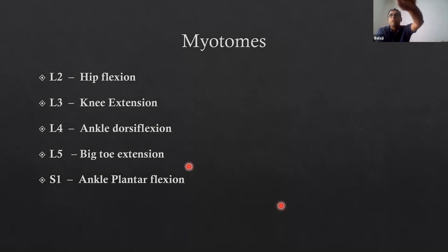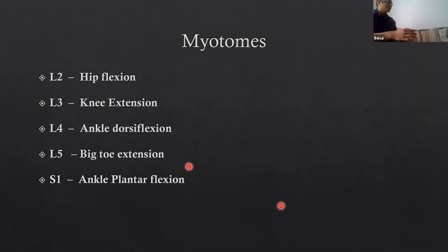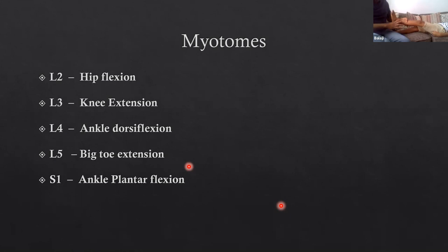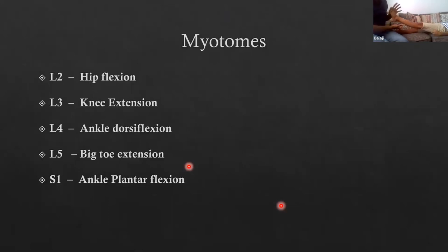To demonstrate the lower limb myotomes with a patient lying down: ask them to lift their leg with the knee straight and resist — that's hip flexion, L2. Knee extension is L3. Ankle dorsiflexion — pulling the ankle up towards you — is L4. Pulling the big toe up towards you is L5. Pushing the feet down is S1. With the patient lying down you can go through all the myotomes from L2 to S1.